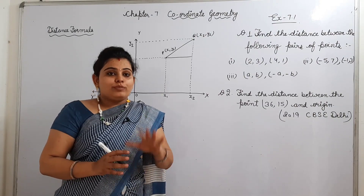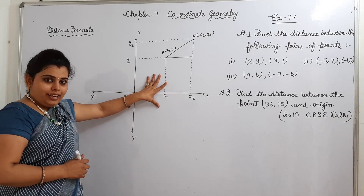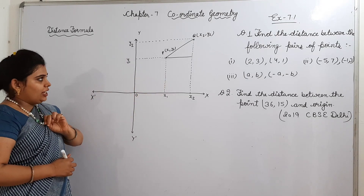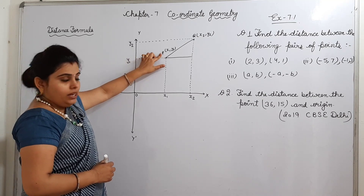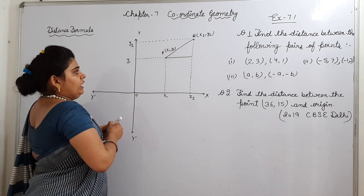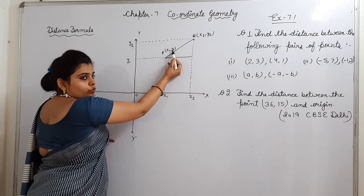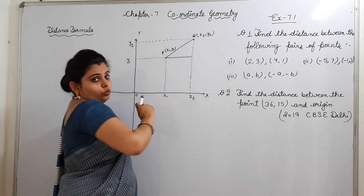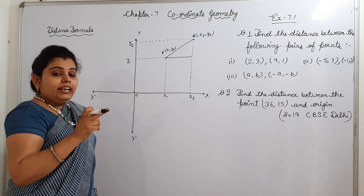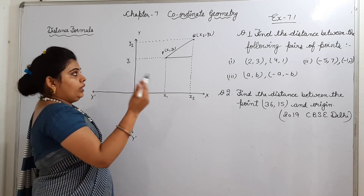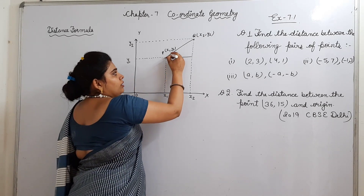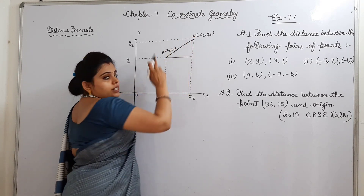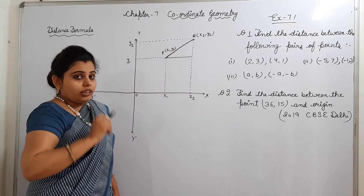Distance formula. Suppose this is a plane with a Cartesian system and two points are given - points P and Q. Coordinates of P are (X1, Y1) and coordinates of Q are (X2, Y2). Now we have to find the distance between P and Q. This line represents the distance between P and Q.